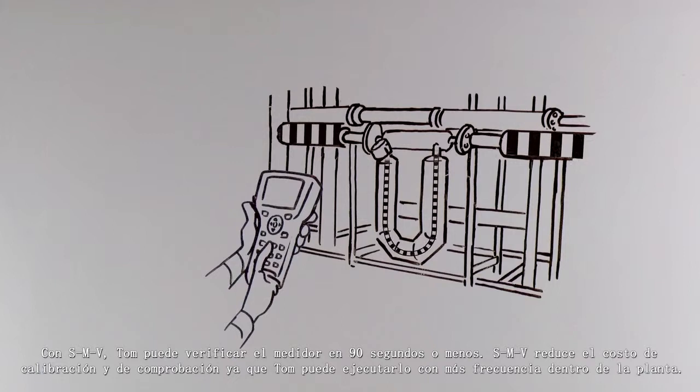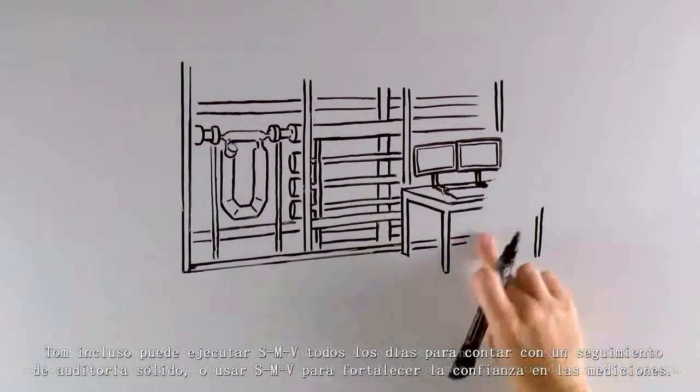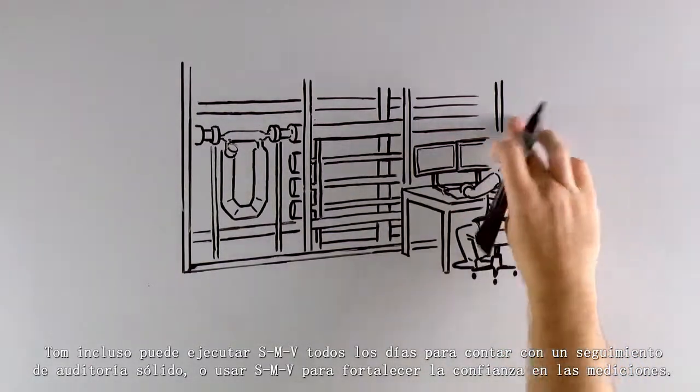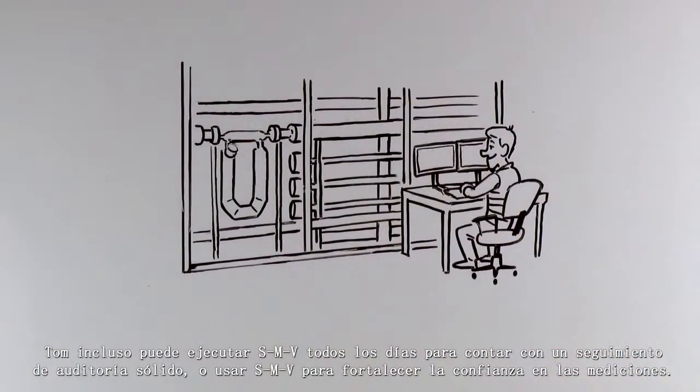With SMV, Tom can verify his meter in 90 seconds or less. SMV cuts the cost of calibration proving because Tom can run it more often within his plant. Tom can even run SMV daily to provide a robust audit trail or use SMV to bolster measurement confidence.